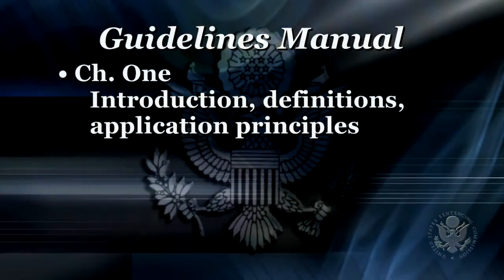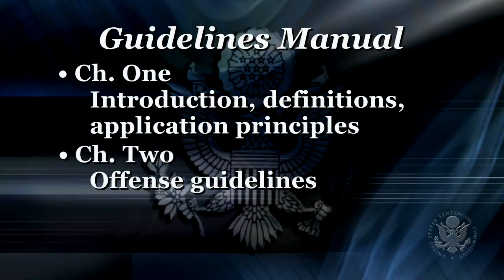Chapter 1 of the manual outlines the instructions, definitions, and application principles to be used in the application of the Federal Sentencing Guidelines. Chapter 2 provides the numerous offense guidelines for the many varied Federal criminal offenses. The Chapter 2 guideline is based upon the Federal offense of conviction and provides the basis for determining the offense level on the vertical axis of the sentencing table.